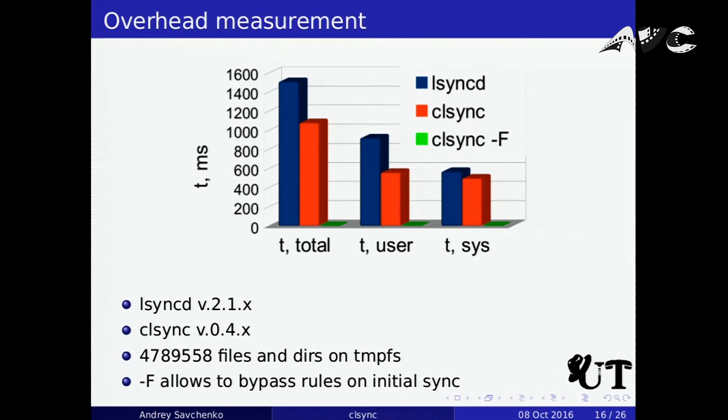This graph shows performance comparison between lsyncd, CLSync daemon, and CLSync in fast initial synchronization mode. These are pure overhead values — real time is largely dependent on your physical disk subsystem, so this test was done on a memory filesystem to measure application overhead. Overhead in fast synchronization mode is almost zero because we don't set all watches immediately. In practice this makes the difference between minutes and hours on initial synchronization between different containers.